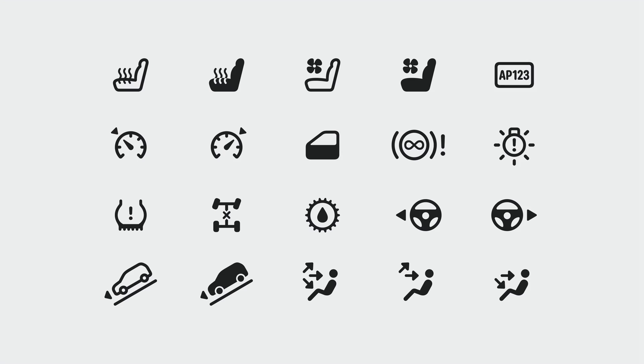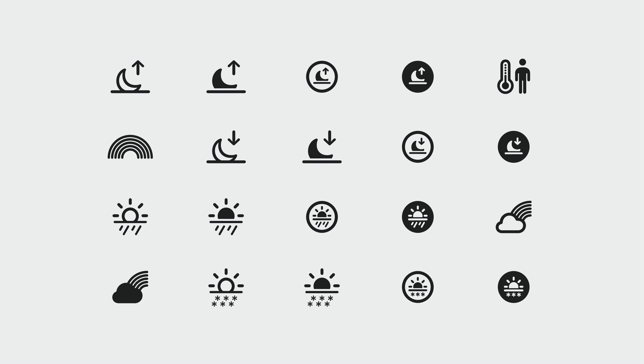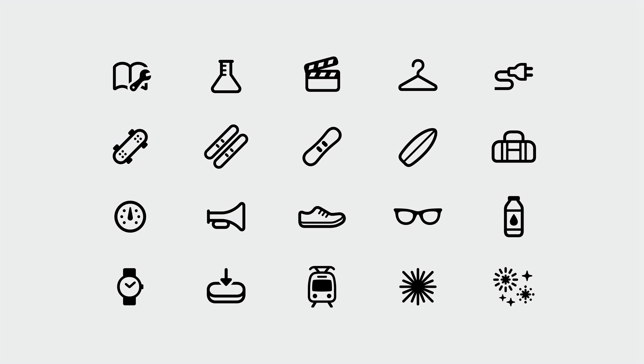Let's look at some of the new additions to the SF Symbols library. We have expanded the automotive category with symbols like steering wheels, car seats, and seated figures. There are new symbols in the gaming category, including arcade consoles, arcade sticks, and different types of buttons. New symbols represent different types of EV plugs, and we've designed new weather symbols like moonrise, moonset, and rainbow. There are many new objects to choose from — over 700 new symbols — making SF Symbols a library of more than 5,000 unique symbols.